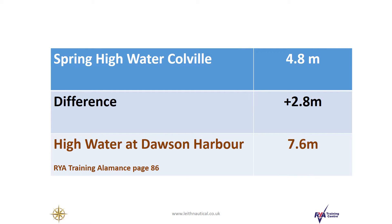Dawson Harbour is a secondary port of Colville, which means we need to look up the height of high water at Colville and then apply a difference for Dawson Harbour. For example, when the high water height at Colville is 4.8 metres, the difference at Dawson Harbour is an additional 2.8 metres, and the high water height at Dawson Harbour will therefore be 7.6 metres.